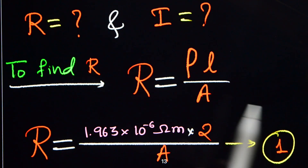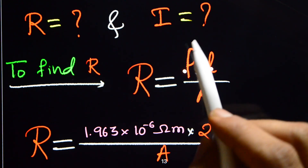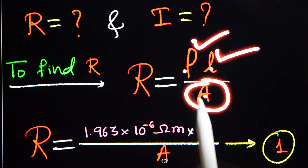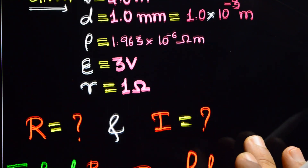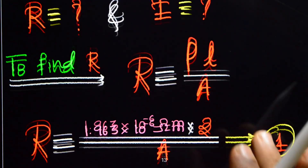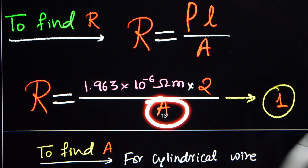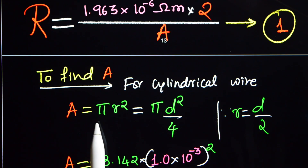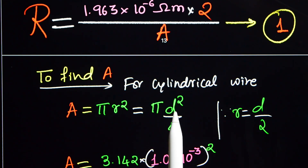Let's first find the resistance R. R is equal to rho times L divided by A, where rho is given and length is given. We need to calculate A, the cross-sectional area. The wire is cylindrical, so the area of cross-section is pi r squared, where r is half of the diameter, giving pi D squared divided by 4.